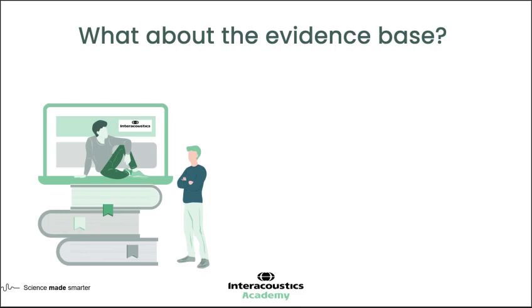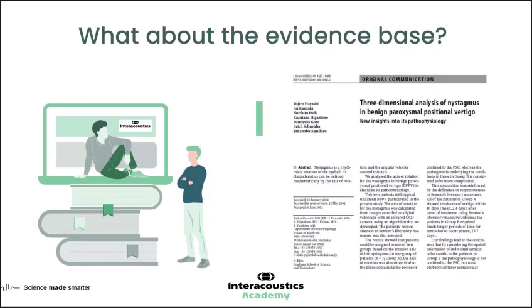There is a growing evidence base around three-dimensional analysis of nystagmus. Typically up to this point, when looking at BPPV and its characteristic torsional eye movement created by the location of the otoconia, clinicians have relied on direct observation, Frenzel goggles, or VNG recording — which captures horizontal and vertical channels — but without a clinical application capable of capturing the torsional element of eye movement.